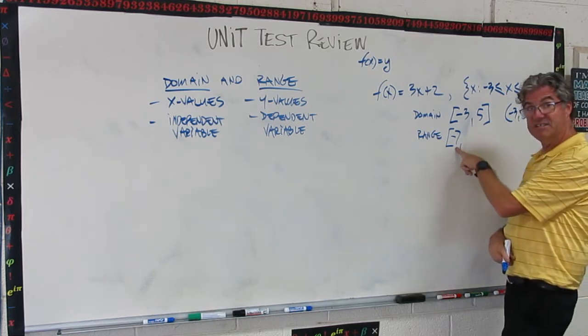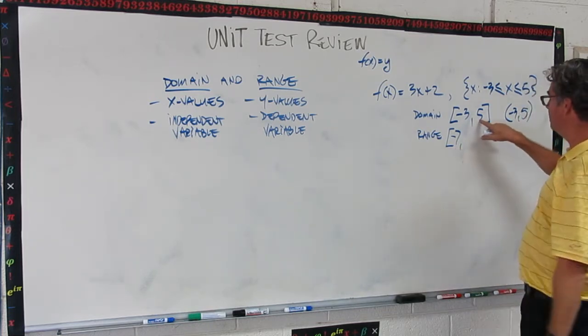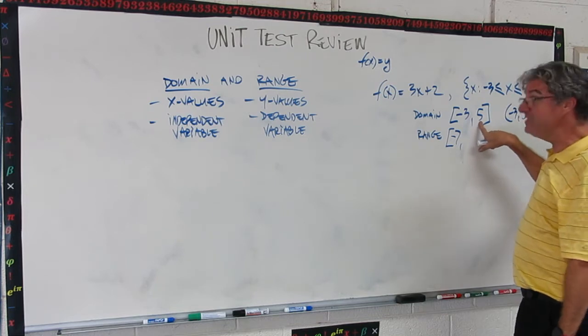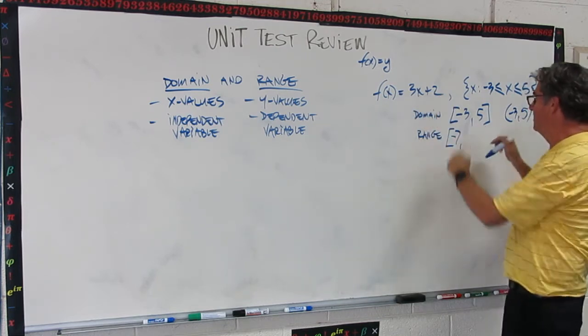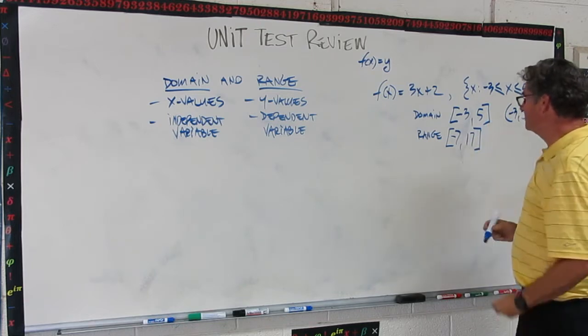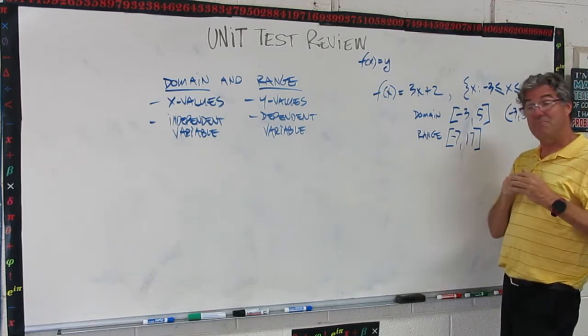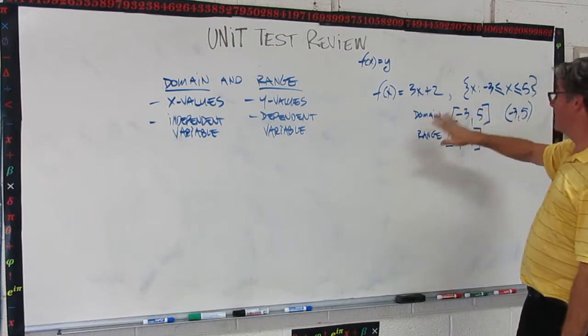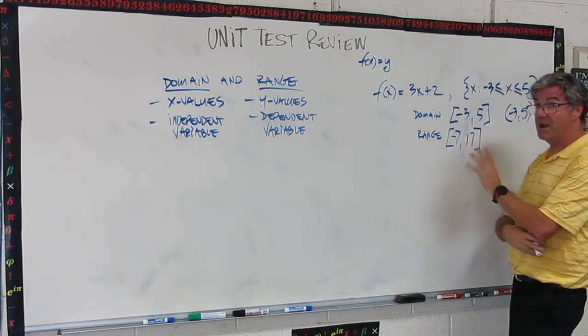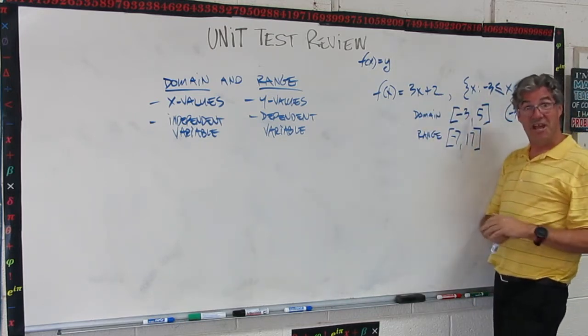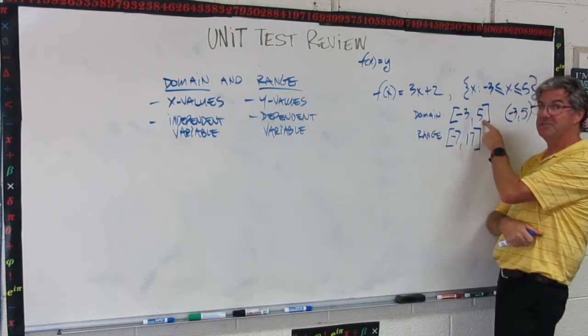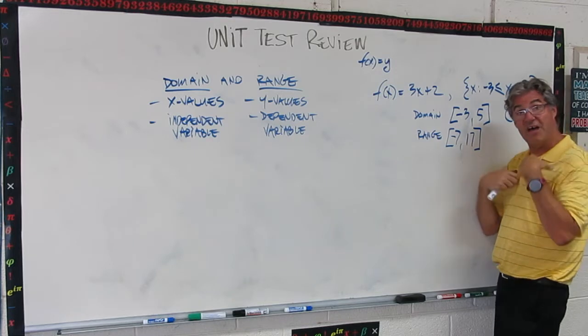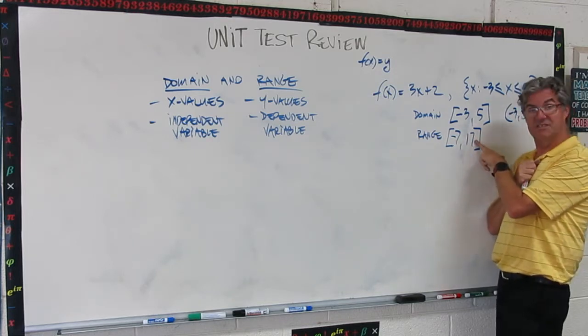So on the lower end, the limit is minus 7, and then on the upper end, we're going to have 5 for our x, so let's plug that in, 3 times 5 is 15, plus 2, so the upper end of the range would be 17. So what this means is for this function and this situation, the range, the variation of values for the domain is negative 3 all the way up to positive 5, and then the range of values for the range is negative 7 up to 17.